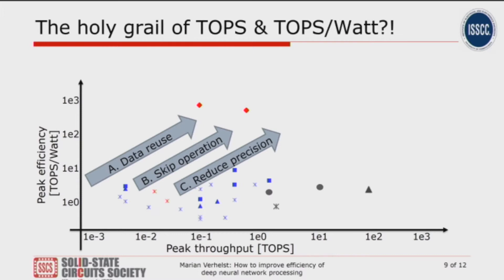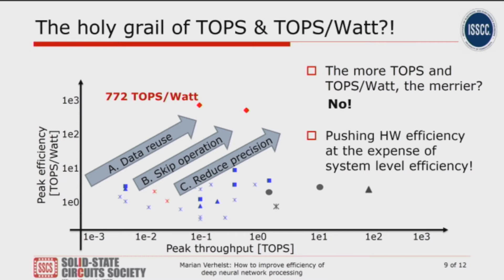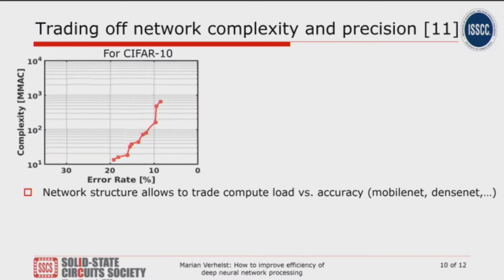The state of the art is pushing along all three vectors, to the extreme that we recently had a 770 tera-ops per watt processor for 1-bit computations. But you might wonder: is maximizing tera-ops per watt really the holy grail? The answer is no, because if you do that, you sometimes start to do it at the expense of efficiency at the system level, which is ultimately what matters. This is a very hardware-centric point of view, and let me illustrate this with a simple example.